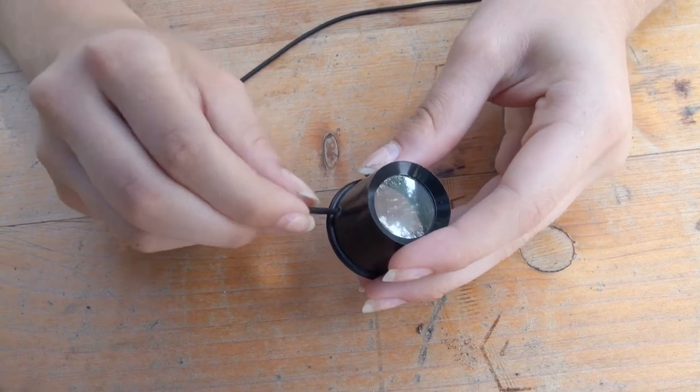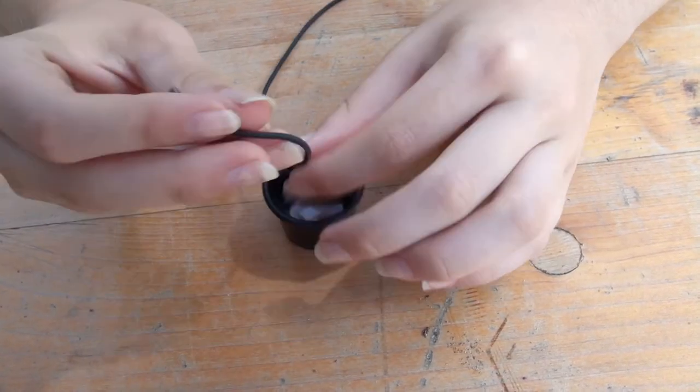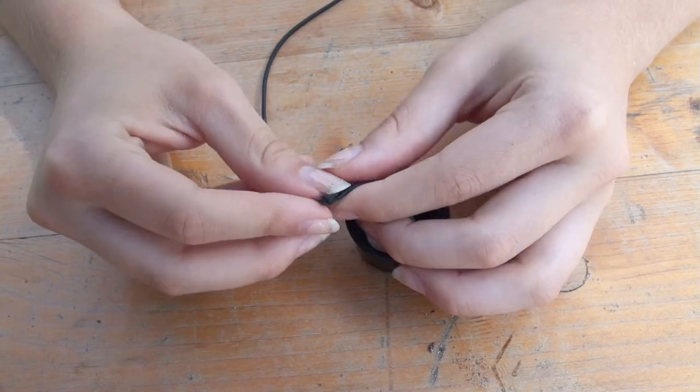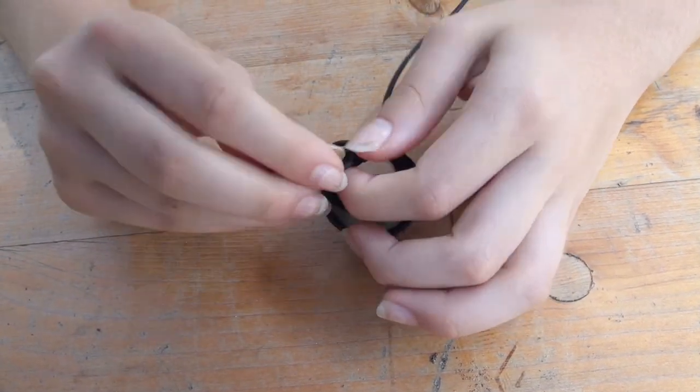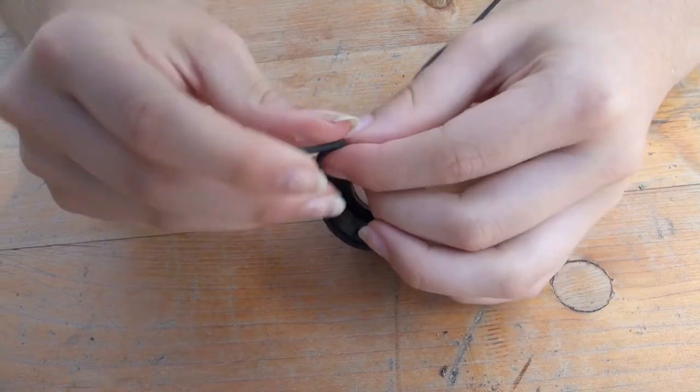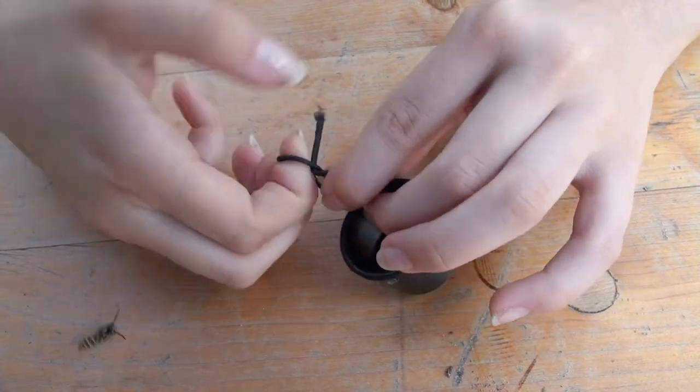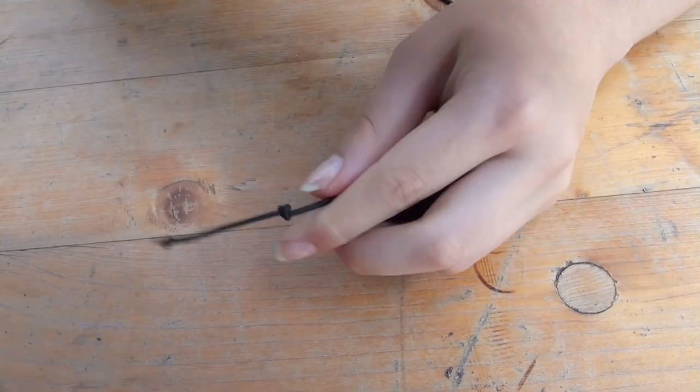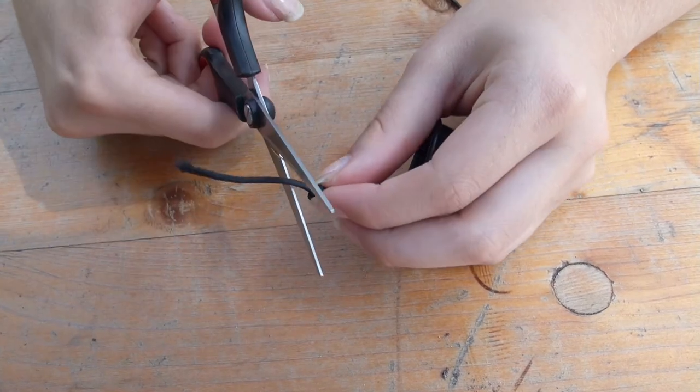Pull the rubber band through the first hole, make one or two knots, and then cut off the rest of the rubber band.